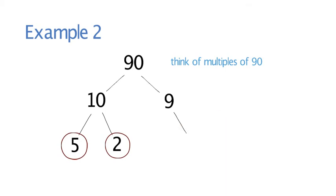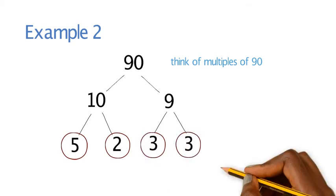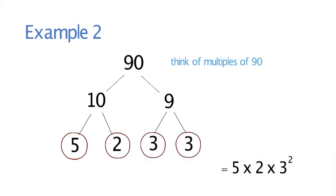In terms of 9, we need to break that down. We know that 3 times 3 is 9. Because 3 is a prime number, we can circle that. Your final answer would be 5 times 2 times 3 squared.